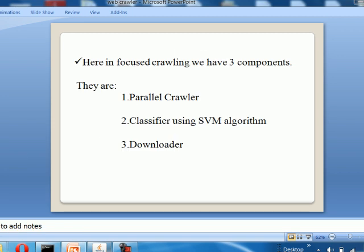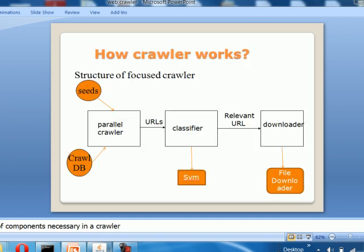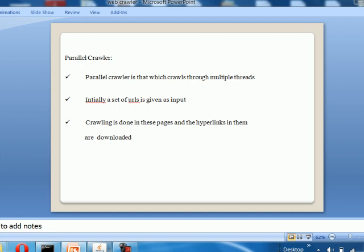Our project has three components: parallel crawler, classifier using SVM algorithm, and downloader. In the parallel crawler, seeds are given initially and a crawl database is maintained to track URLs that have been traversed. The classifier uses the SVM algorithm to classify URLs as relevant or not. Irrelevant URLs are discarded; the relevant ones are downloaded and stored in the downloader. The parallel crawler crawls through multiple threads, with a set of URLs given as input and hyperlinks downloaded.